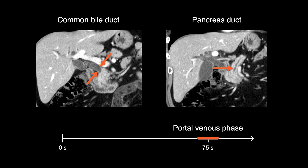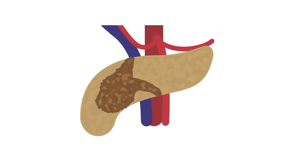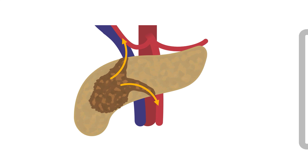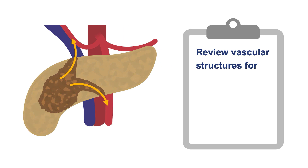Although we cannot see the primary tumor well, we can infer its boundaries by the location of the abrupt tapering of these ducts. A major part of local staging of pancreas adenocarcinoma is to look for vascular involvement, both arterial and venous, as pancreas adenocarcinoma often spreads locally along the vasculature. In order to look for vascular involvement, we carefully review all vascular structures in the late arterial and portal venous phases for subtle soft tissue thickening, stranding, or narrowing.